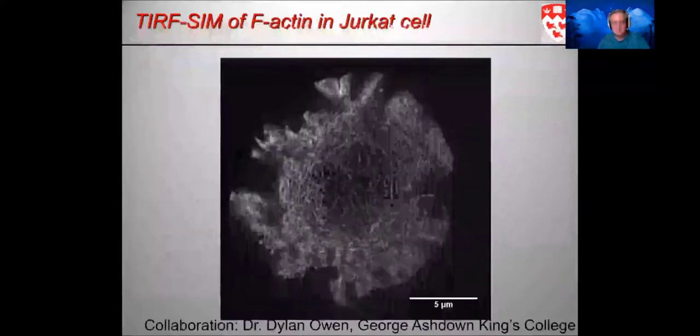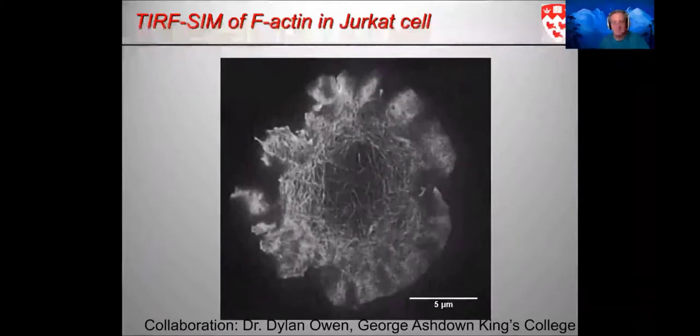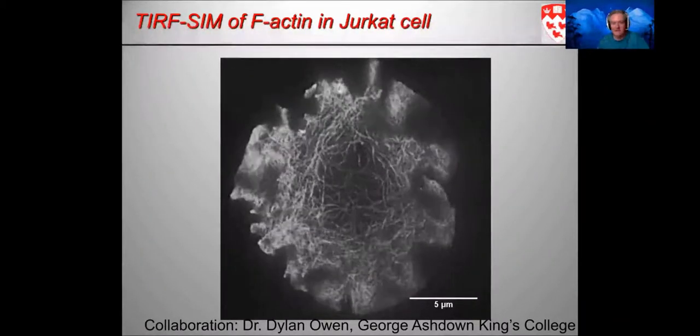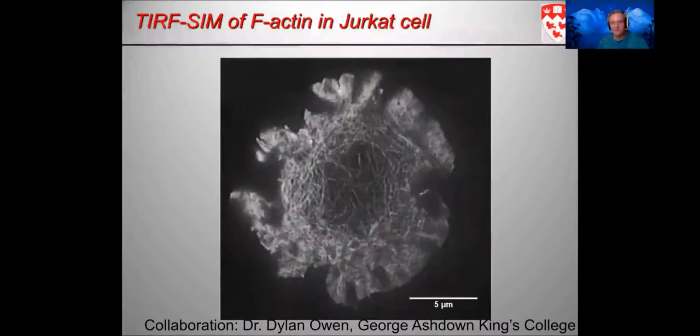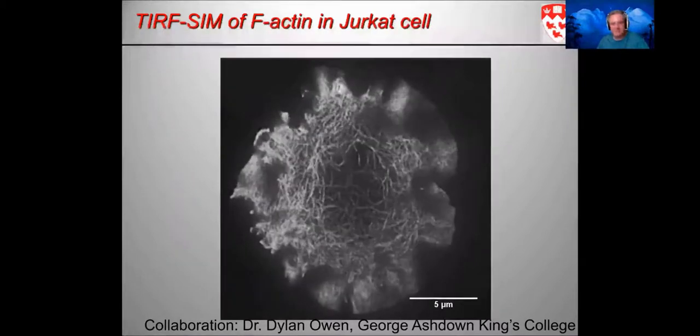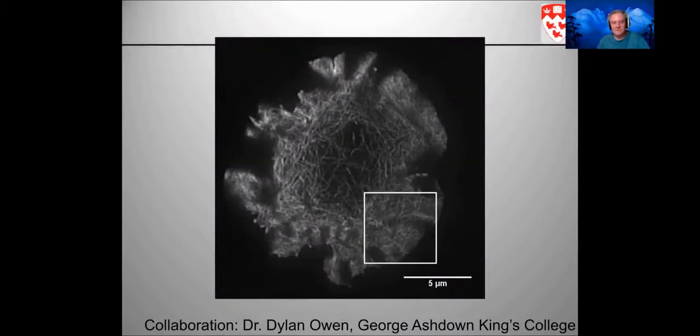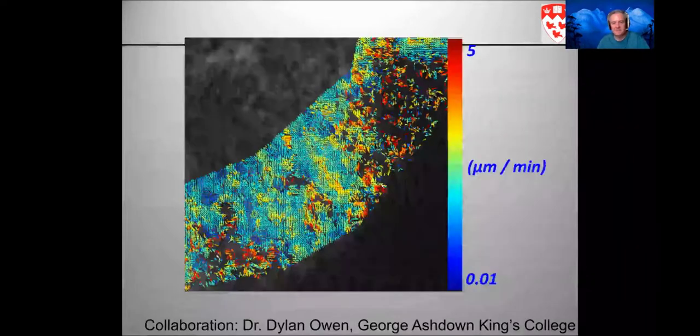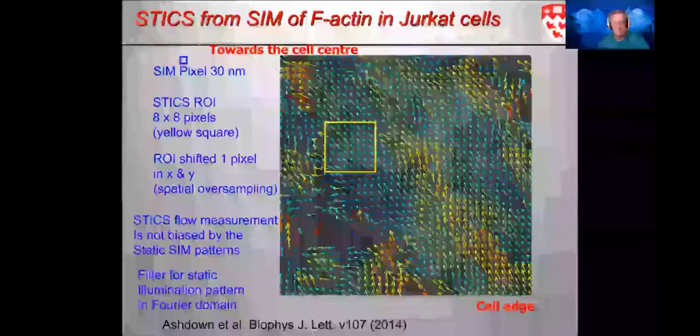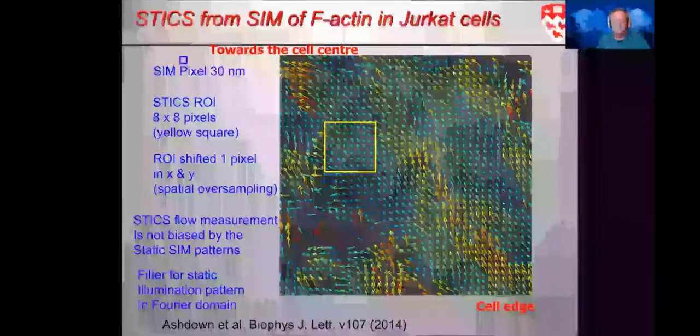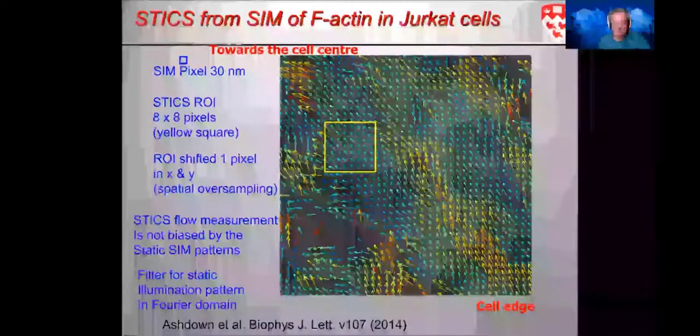Here is TIRF-SIM microscopy of labeled F-actin in Jurkat T cell. You see in the periphery, you can see retrograde movement of the actin. Basically, what Dylan and George did was through immune presentation generated artificial synapses at the periphery of these cells. So you can really see the retrograde motion there. If we look in a region, we can do in parallel on different regions of interest, space-time image correlation spectroscopy. And there's a vector map for the actin in the system.